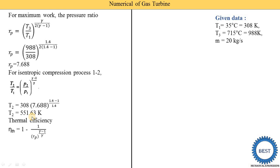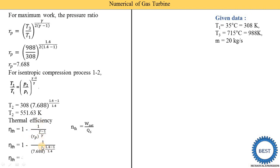Next, we calculate thermal efficiency using: eta = 1 − 1 / (RP ^ ((gamma − 1) / gamma)). Substituting RP = 7.688 and gamma = 1.4, we get thermal efficiency = 44.16%. You can also use the equation: eta = net work / heat supply, which gives approximately 43.90% — both answers are correct and either equation will earn full marks.